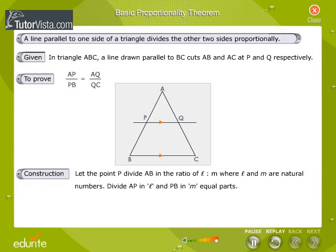Construction: Let point P divide AB in the ratio of L is to M, where L and M are natural numbers. Divide AP in L and PB in M equal parts.